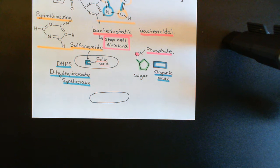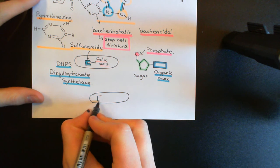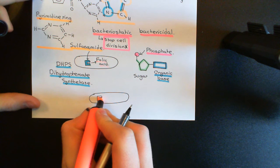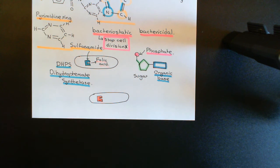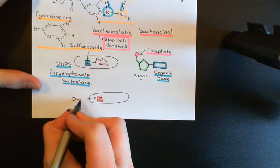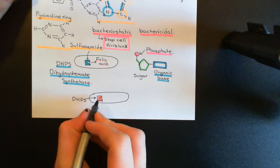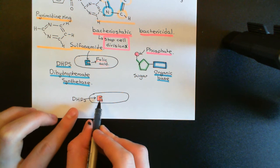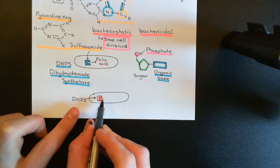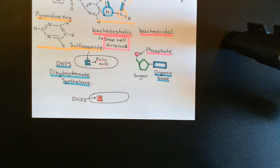Resistant bacterial cells have been found to have a new, modified form of the dihydropteroate synthase enzyme — I'll draw it here in red — this is DHPS, but a slightly modified form. This slightly modified form of the dihydropteroate synthase enzyme is no longer sensitive to the sulfonamides. They cannot bind to it anymore and competitively inhibit the access of para-aminobenzoic acid anymore. So the sulfonamides become totally useless.